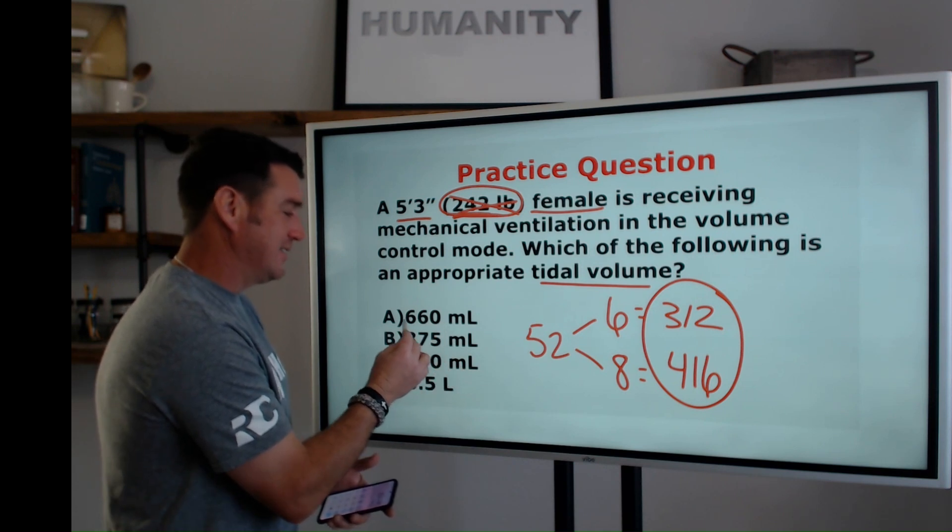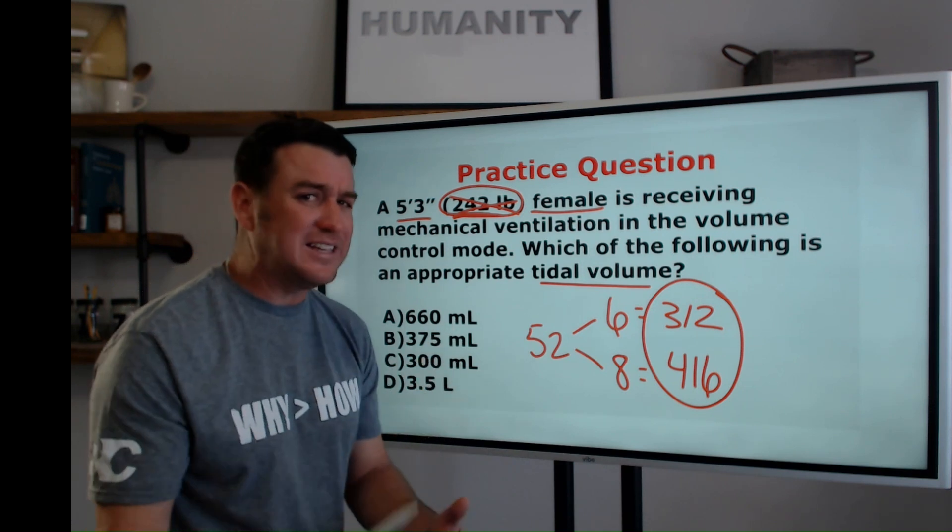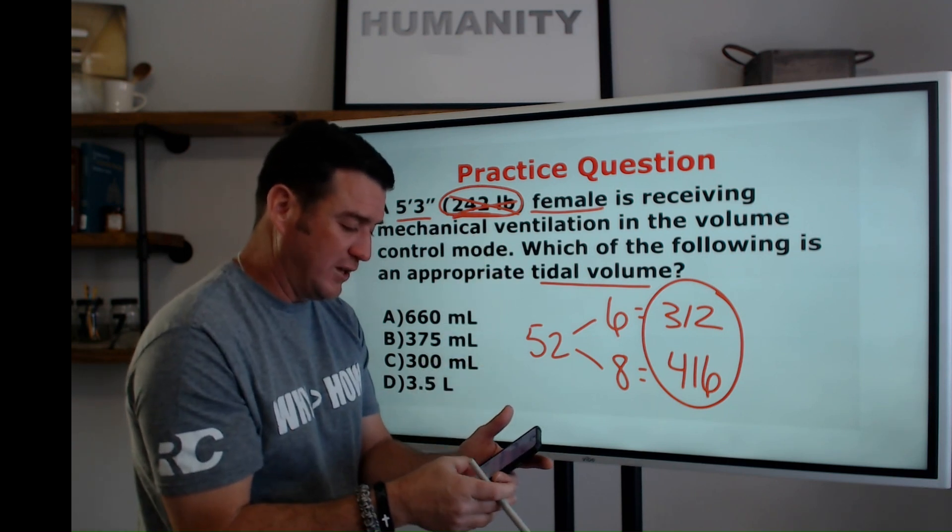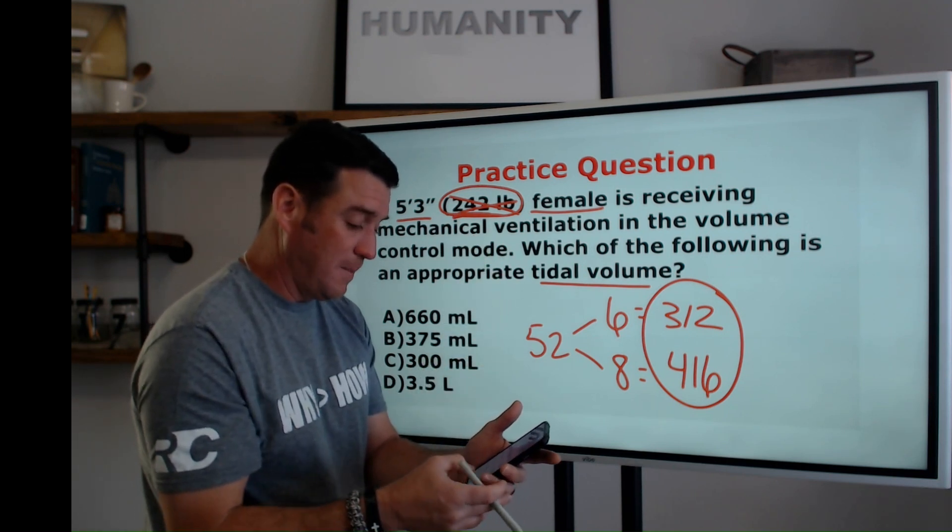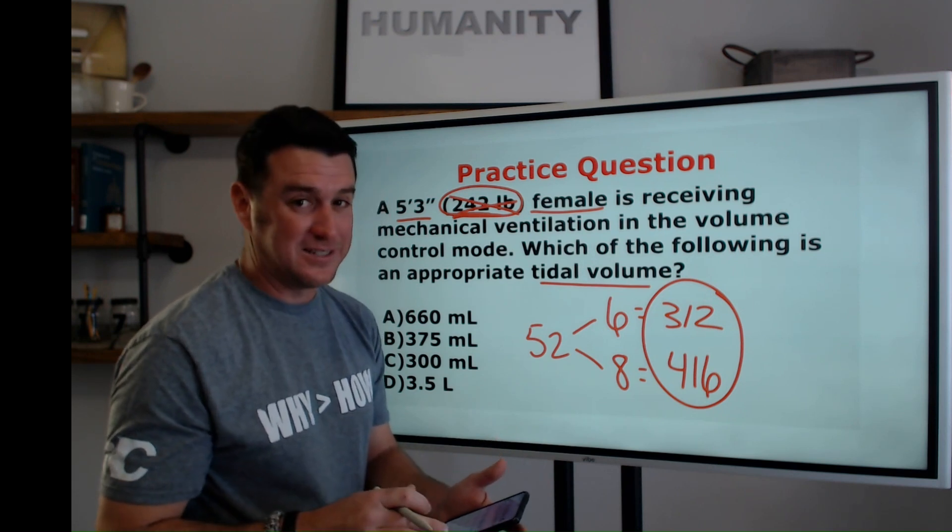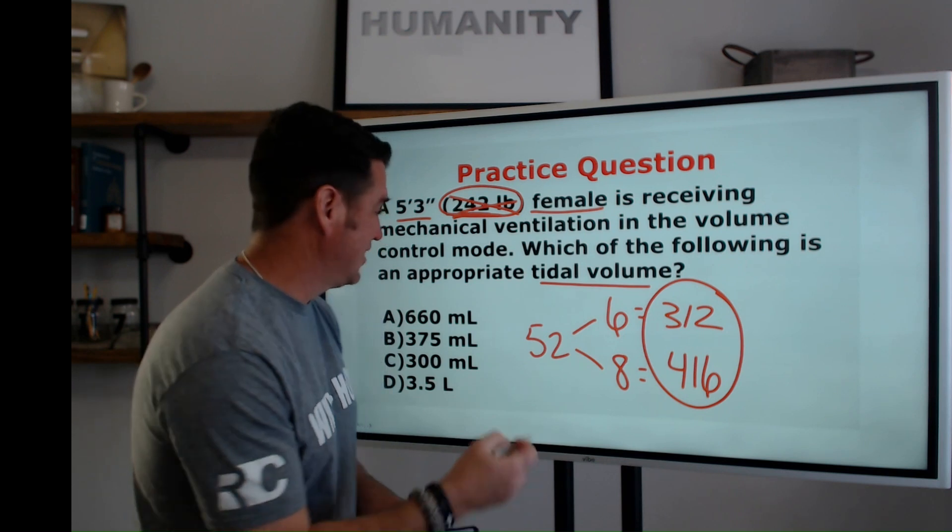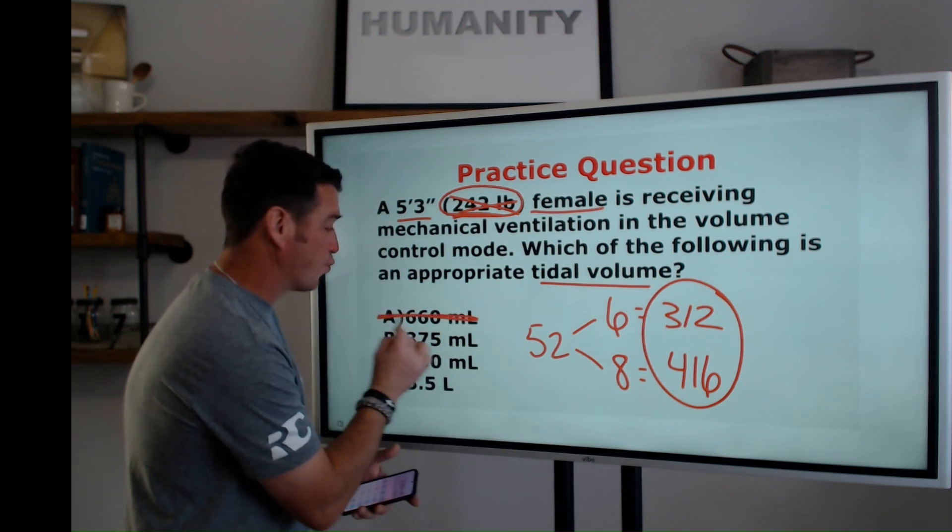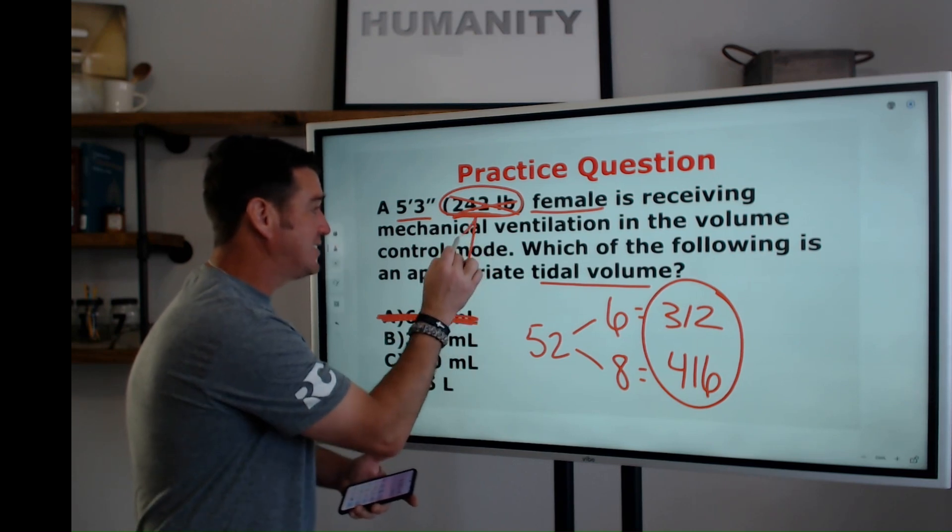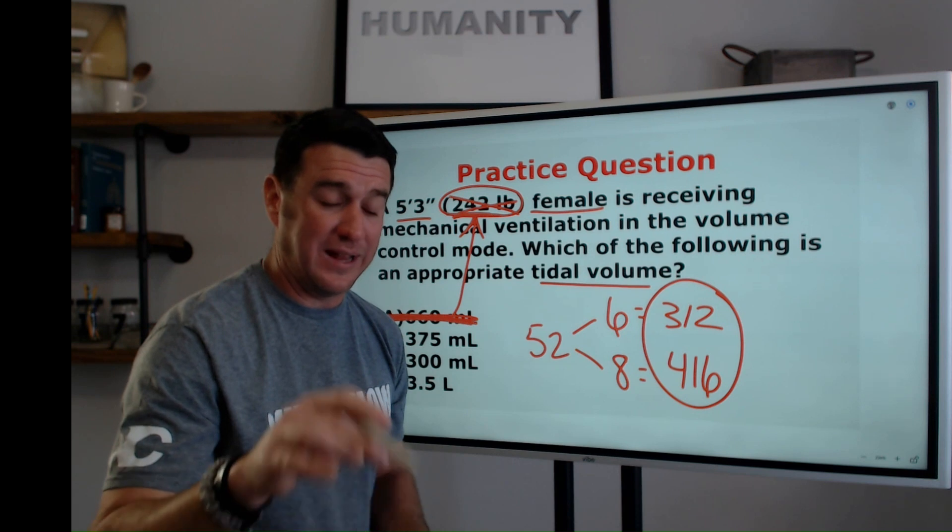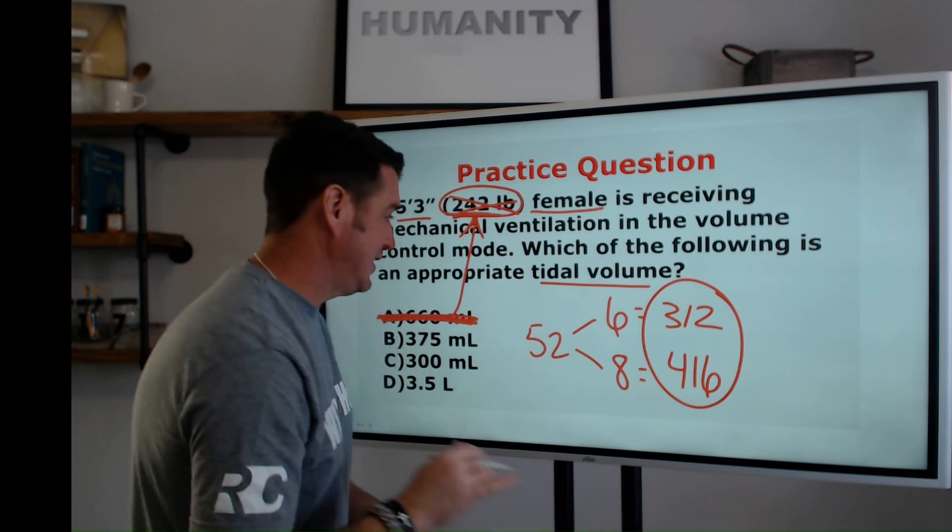660 mLs. That's not the correct answer, but why is that an answer? Well, 242 pounds. What happens if we do 242 divided by 2.2? We get 110. 110 times 6 mLs per kilogram, 660. They want you to pick this answer, but this is wrong because it's based off of actual body weight and not predicted body weight. That's the message that we're sending here.